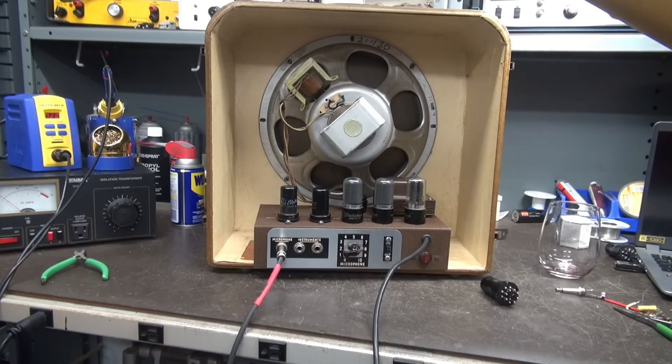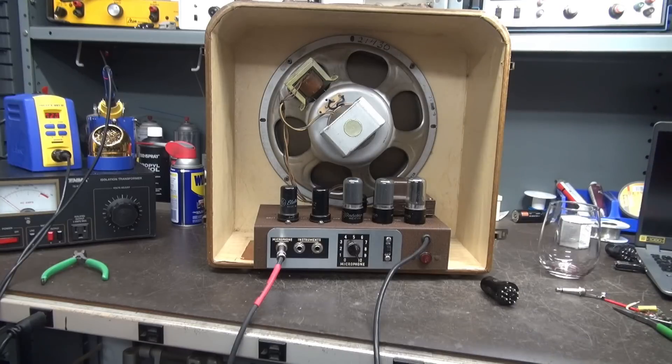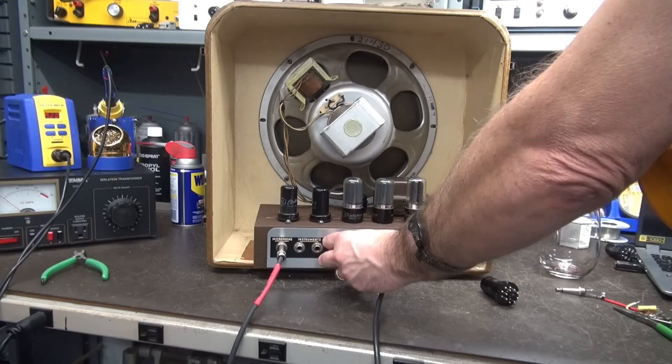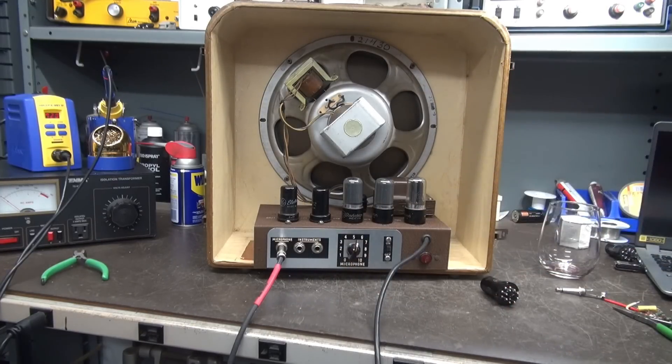All right. Now I've got the 6AC7 installed. Quite a bit more gain. See yep. That is the tube that I would prefer running in the Gibson EH-125.